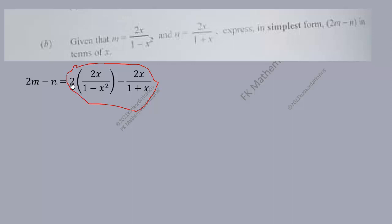So let's first of all multiply to give us 4x over 1 minus x squared, minus 2x over 1 plus x.